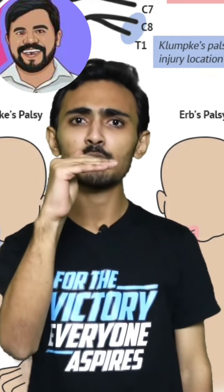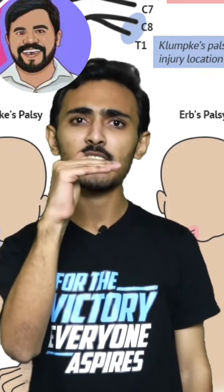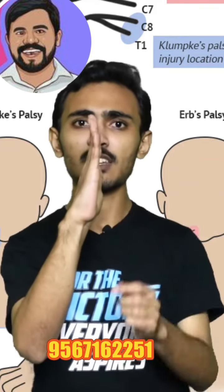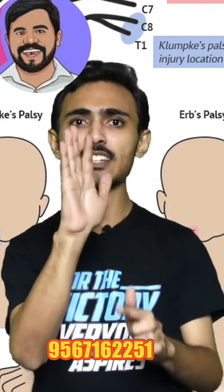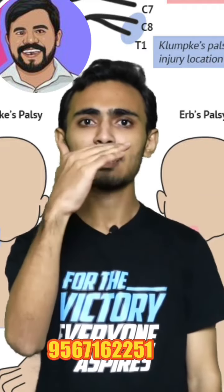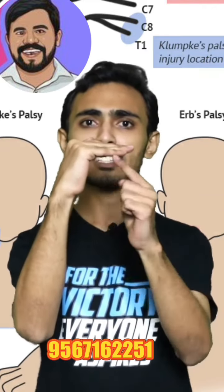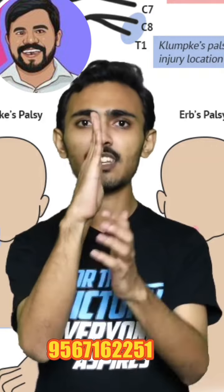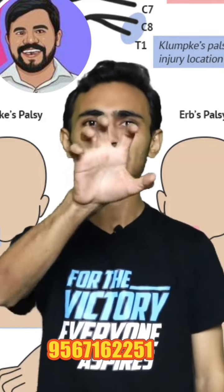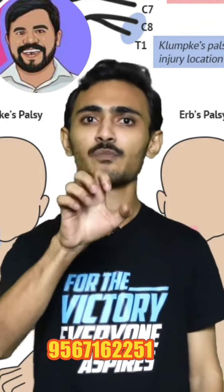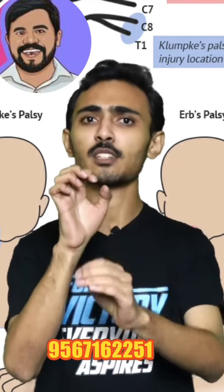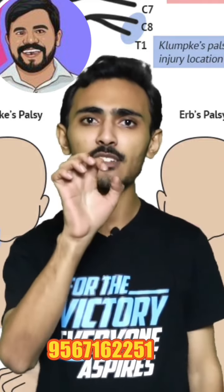Now we will make this its opposite — what happens when these muscles are lost. This brings us to the concept of claw hand deformity in Klumpke's paralysis: extension at the metacarpophalangeal joint and flexion at the interphalangeal joints.